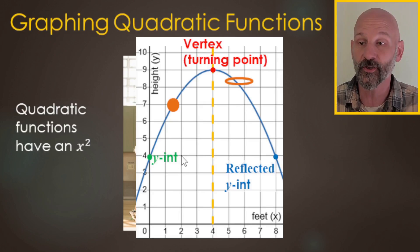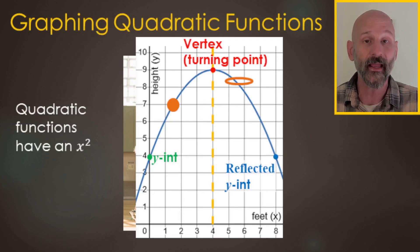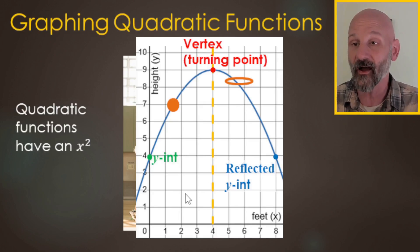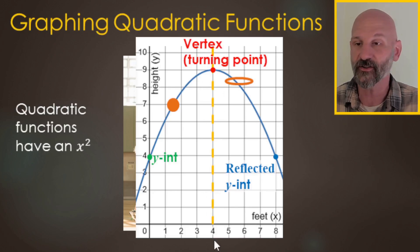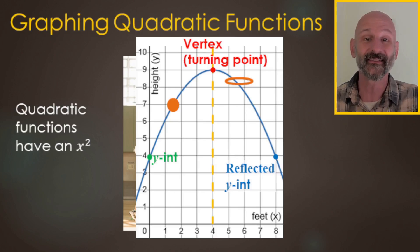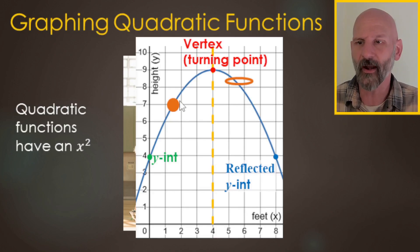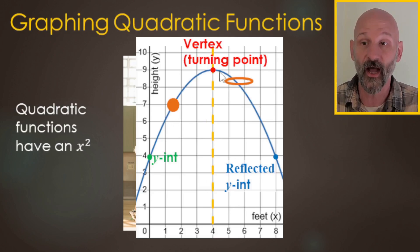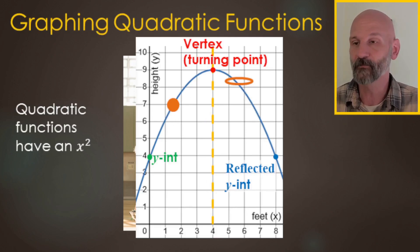The y-intercept is one, two, three, four spots away from the line of symmetry or axis of symmetry — this yellow dashed line. And so one, two, three, four on the other side is that reflected one, just like we had a reflected ball over on this side because it goes up and then comes back down.